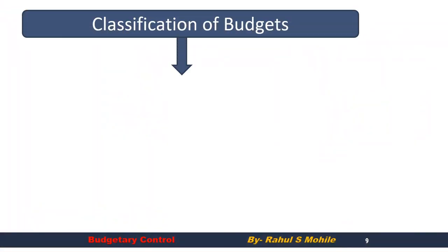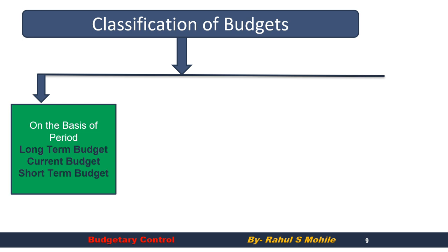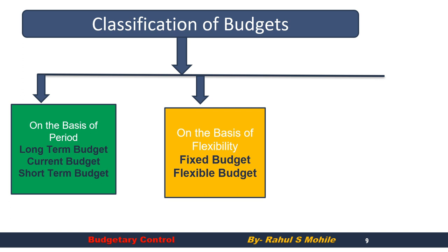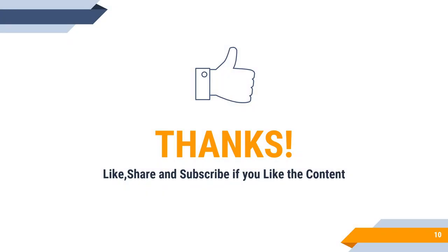Now let us look at classification of budgets. On the basis of period, we have long-term budget, current budget, and short-term budget. On the basis of flexibility, we have fixed budget and flexible budget — flexible budget is frequently asked in papers, so we will solve practical questions on it. On the basis of functions, we have master budget and functional budget. There is also an important budget called cash budget, which deals with inflow and outflow of cash, and we will discuss that as well.